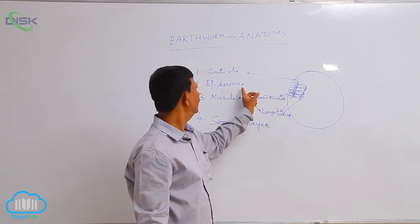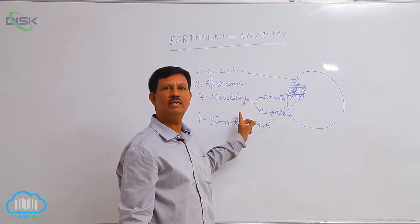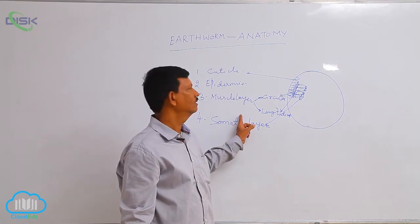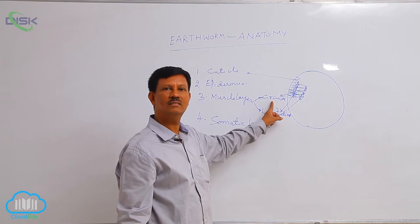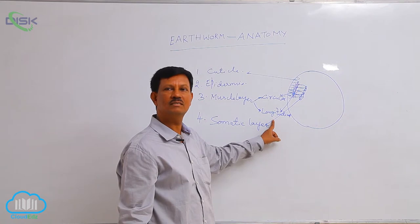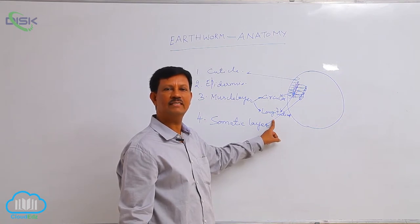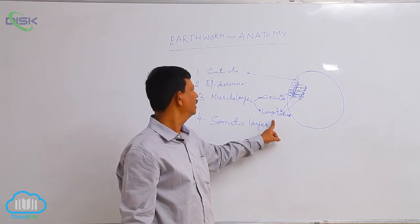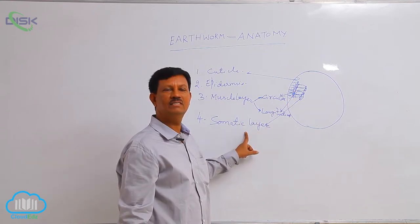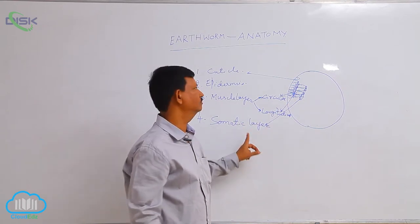Below the epidermis, the musculature is present. There are two types of muscles: circular muscles on the outer side, and longitudinal muscles on the inner side. These two muscles contract and expand. Below the muscular layer is the somatic layer, which is derived from the mesoderm.